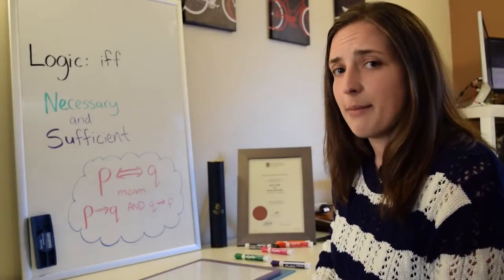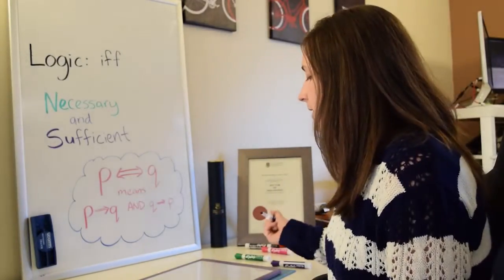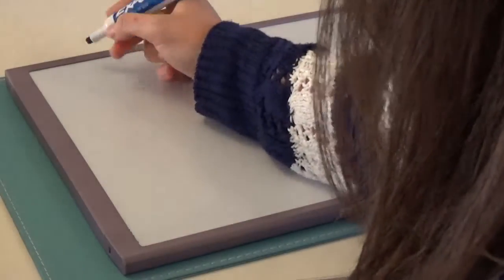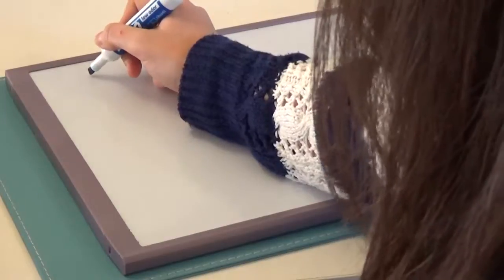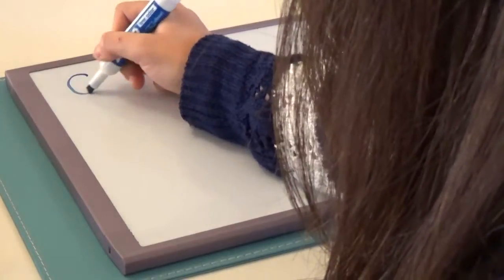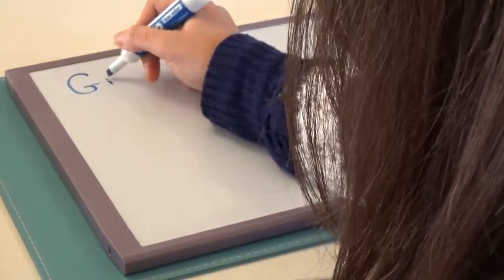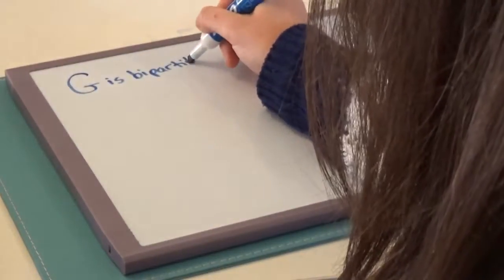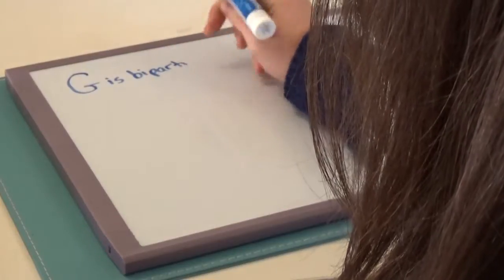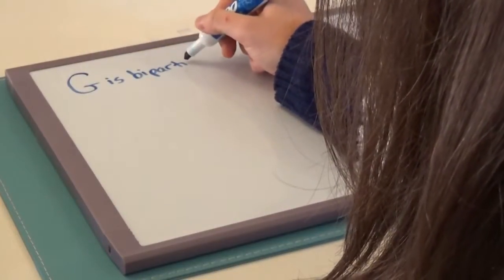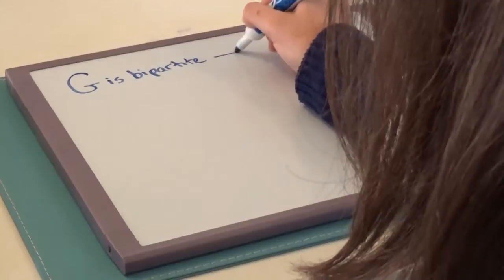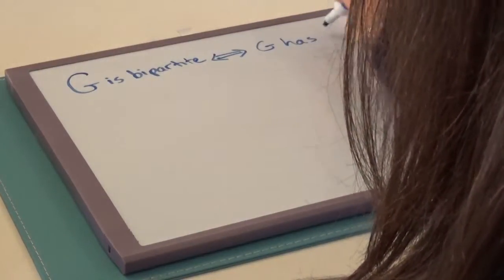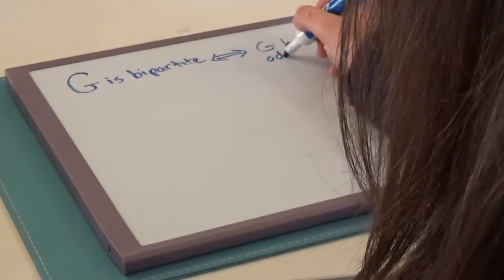So let's think about a little example. Now, in this example, I'm going to use something that you may have recognized from my other channel about graph theory videos. We have this example that a graph is bipartite if and only if the graph has no odd cycles.